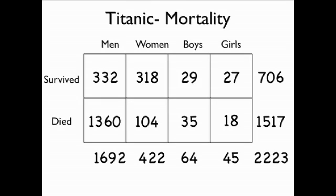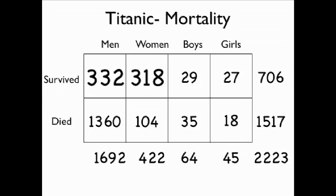This table represents the mortality rate of passengers who boarded the Titanic. The first row is labeled 'survived' and the second row is labeled 'died.' The columns represent men, women, boys, and girls. This table represents the number of each group that survived or died. For example, 332 men survived and 318 women survived.